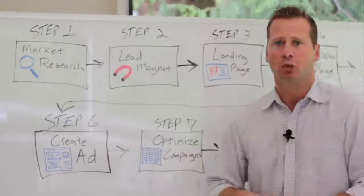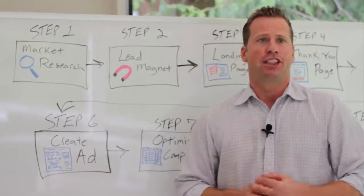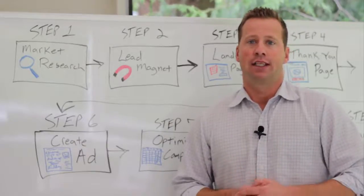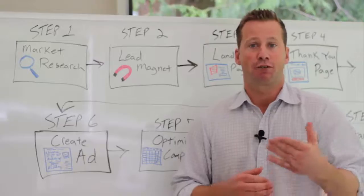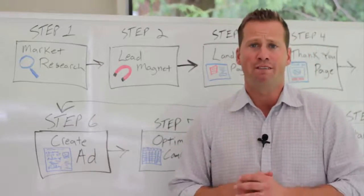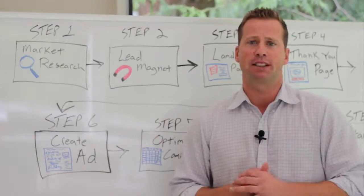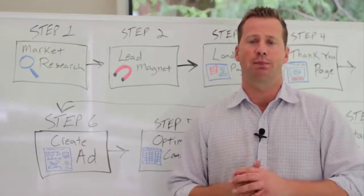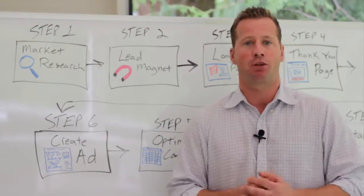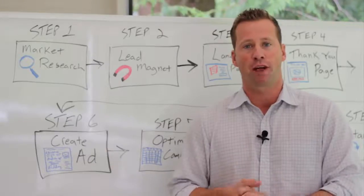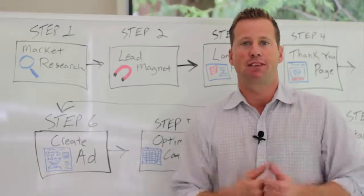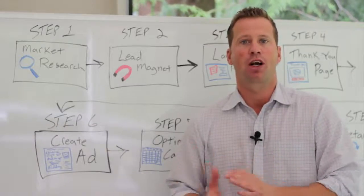Step two is the lead magnet. Great lead magnets are things like checklists, cheat sheets, webinar registrations, free video series, software free trials, free demos, local events, educational events — something like a free detox seminar for a fitness company — or a coupon or discount, like a buy-one-get-one-free offer for a restaurant. Discounts and coupons are great for local businesses or local live events, and then you can keep them as a lifetime long-term customer.